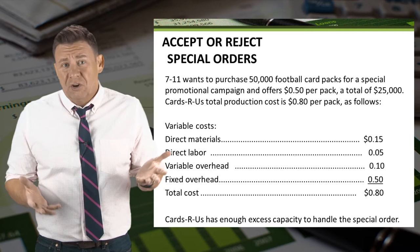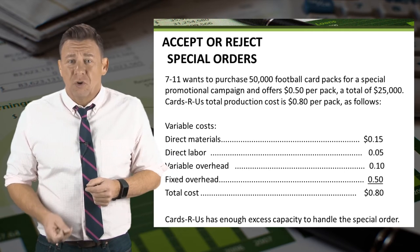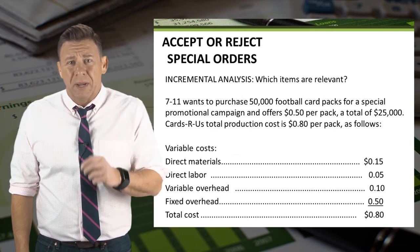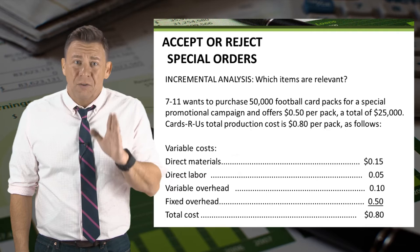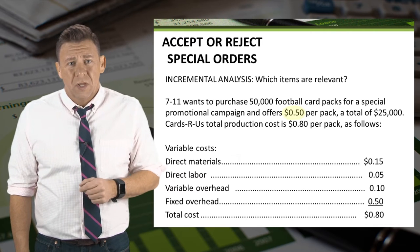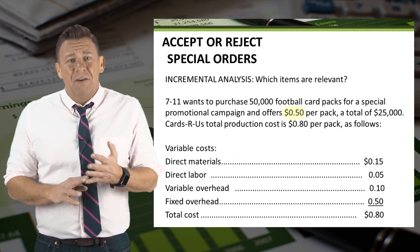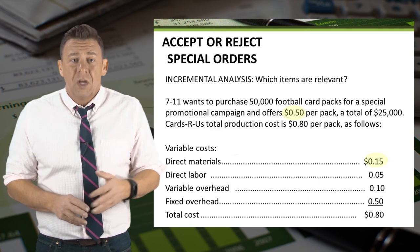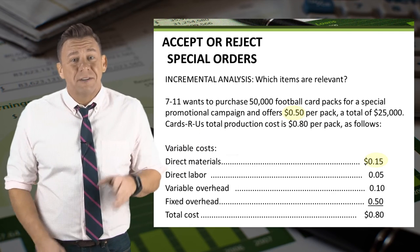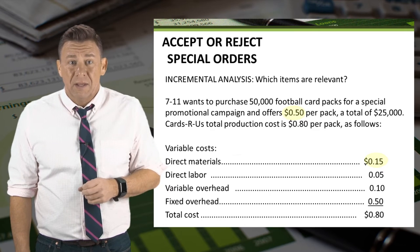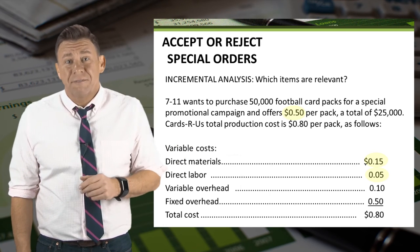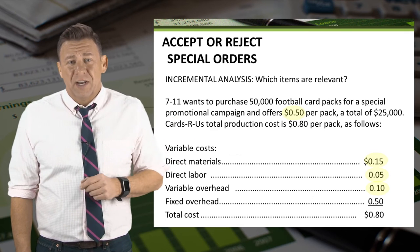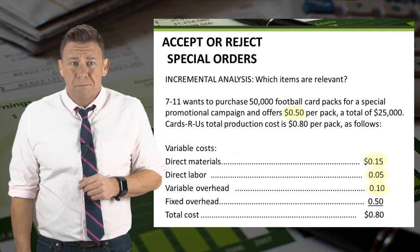So should management accept this special order from 7-Eleven? To answer the question, we need to perform incremental analysis and identify the relevant data. The special price of $0.50 per pack is relevant to the decision, as is the direct material cost of $0.15 per pack, the direct labor cost of $0.05 per pack, and the variable overhead cost of $0.10 per pack.